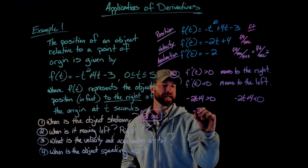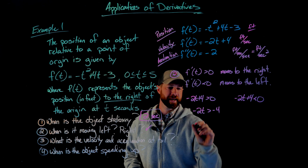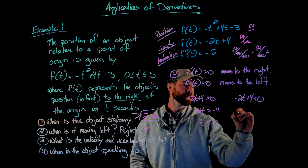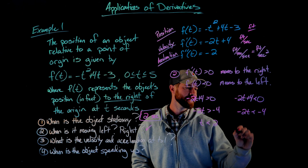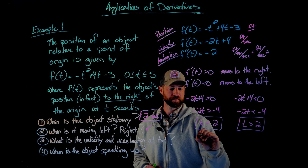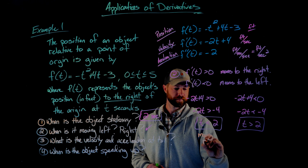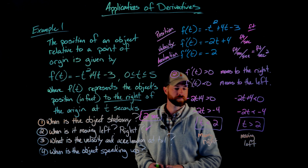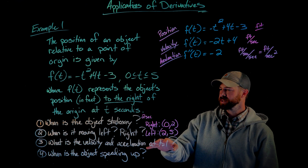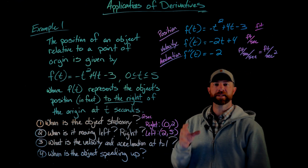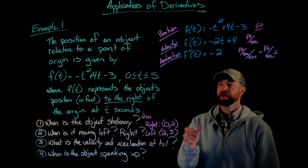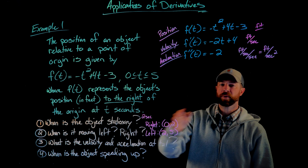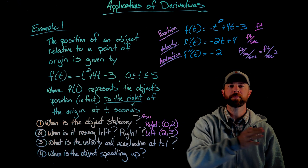Solving these inequalities: subtracting 4 from both sides gives negative 2t greater than negative 4, then dividing by negative 2 — flipping the inequality sign — gives t less than 2 for moving right. Similarly, t greater than 2 for moving left. On the domain restricted from zero to five, the object moves to the right from zero to two seconds, is stationary at two seconds, and then moves back to the left between two and five seconds.